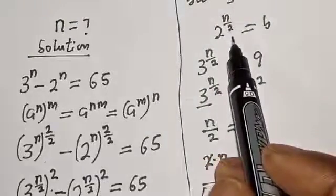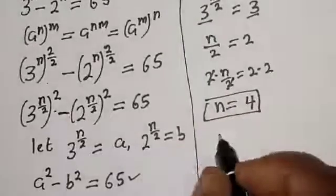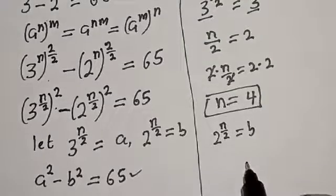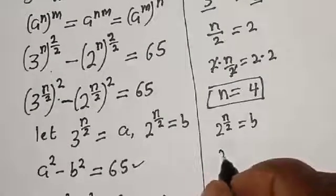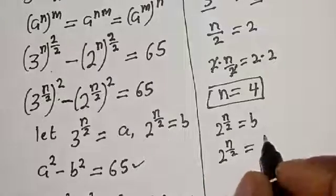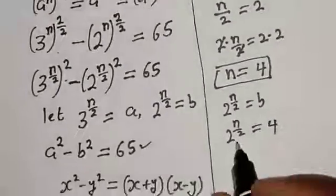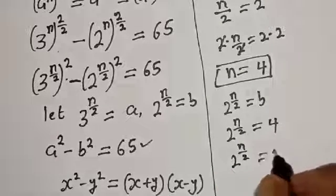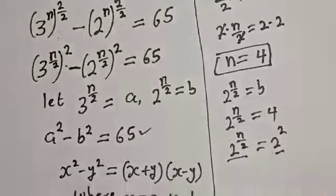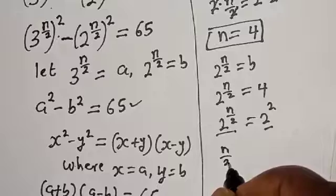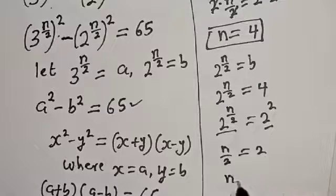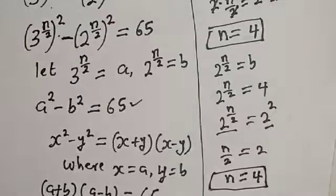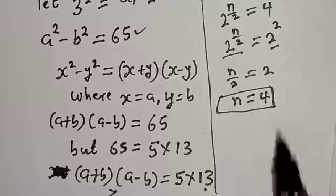We can also verify using b: 2 raised to power n over 2 equals b equals 4, which is 2 squared. So n over 2 equals 2, and n equals 4. Both substitutions confirm n is equal to 4.